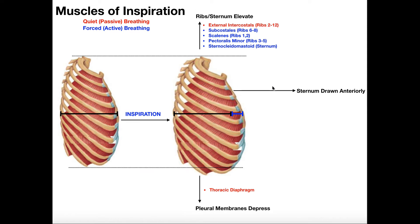All three of those directions are going to increase the size of the thoracic cavity and allow the lungs to expand even more. The subcostalis muscles elevate ribs six through eight. Scalenes elevate ribs one to two. Pectoralis minor elevates ribs three through five. And the sternocleidomastoid muscle can actually elevate the sternum, which will also help draw it anteriorly. Whenever the ribs are elevated, the sternum is drawn anteriorly by default — there is no muscle that directly pulls the sternum anteriorly, but by elevating the ribs upward, the sternum ends up there by default. So during forced inspiration, you contract the diaphragm and external intercostals harder, but also recruit these other muscles.